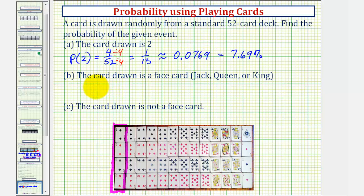Next, we want to determine the probability that the card is a face card, meaning it's a jack, queen, or king. So the probability of a face card would be equal to the number of face cards divided by the total number of cards.